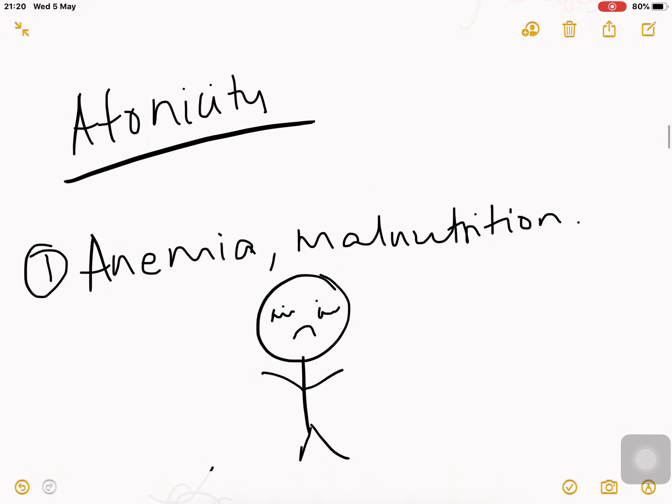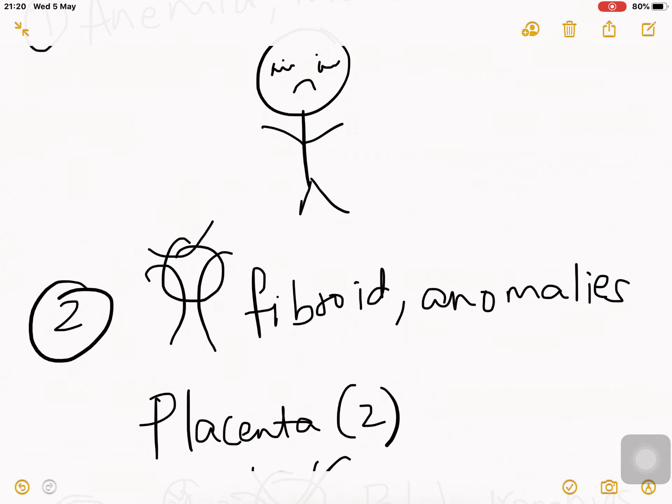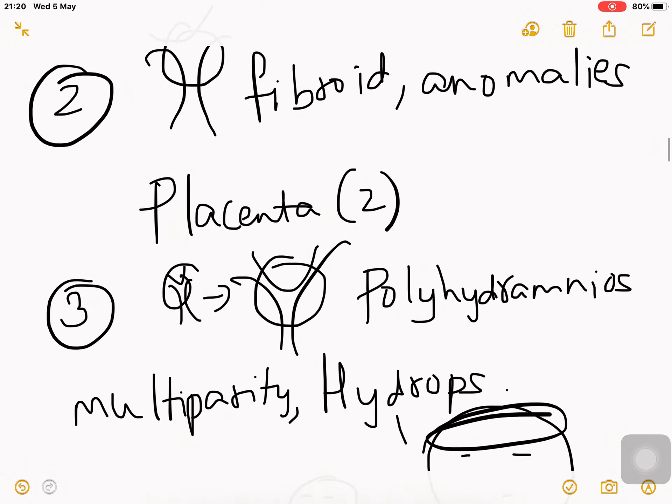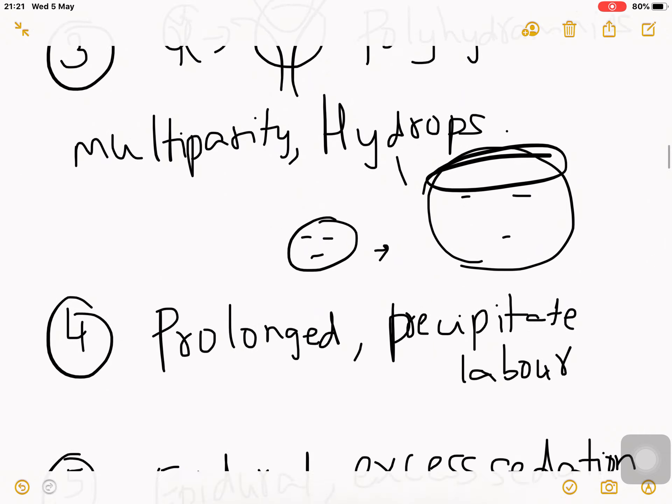Atonicity can occur because of general reasons like anemia and malnutrition in the mother - the mother is weak, so the uterine muscle tone is weak. There could be problems with the uterus like uterine anomaly or fibroid, problems with the placenta like placenta previa and abruption placenta, or an over-distended uterus from polyhydramnios, multiparity, or a big fetal head like hydrops fetalis.